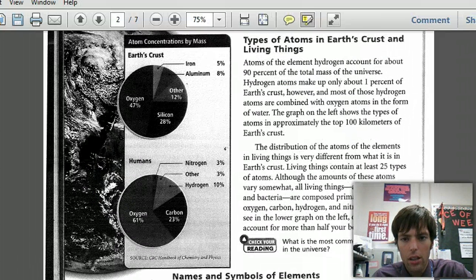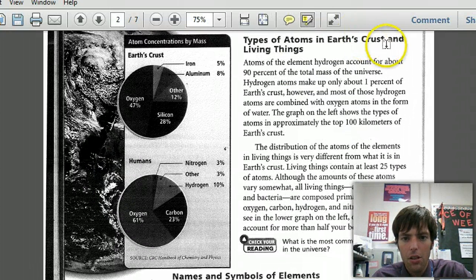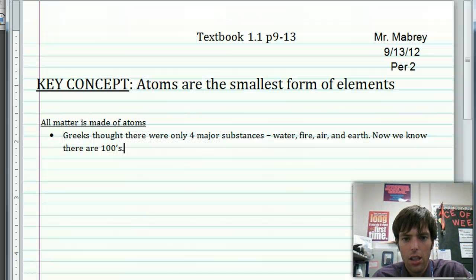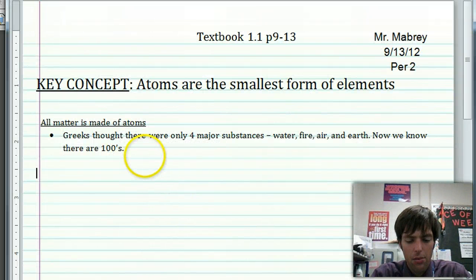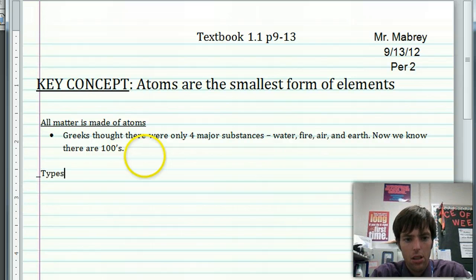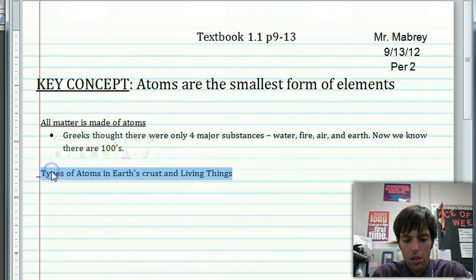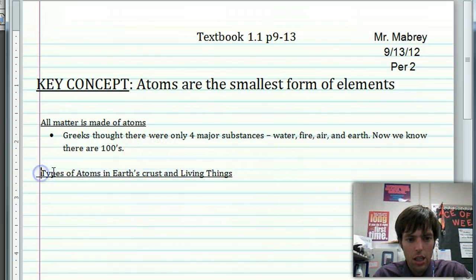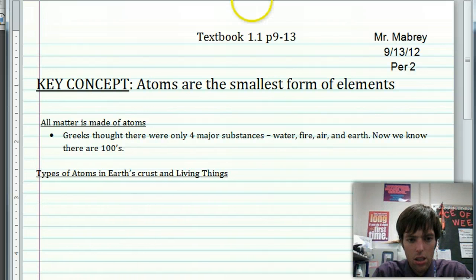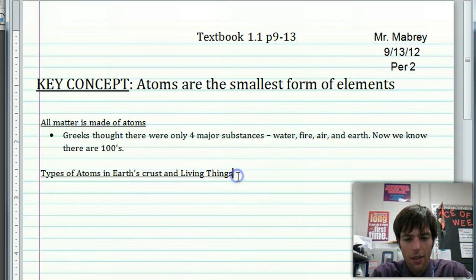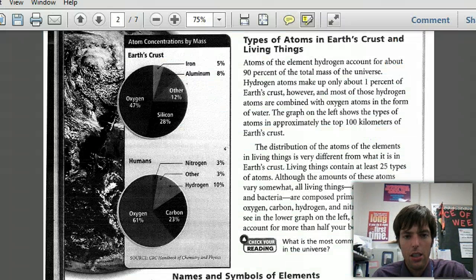Alright, new heading: types of atoms in Earth's crust and living things. Types of atoms in Earth's crust and living things. I'm going to underline it so I know that that's a heading. And then I have to summarize, so I'm going to go and get my bullet point ready. Great, we're ready. Back to my text.